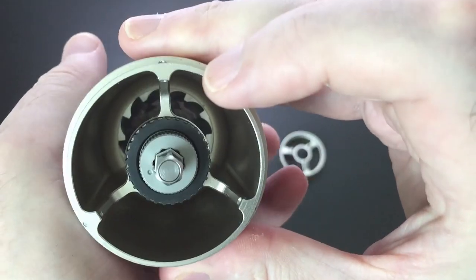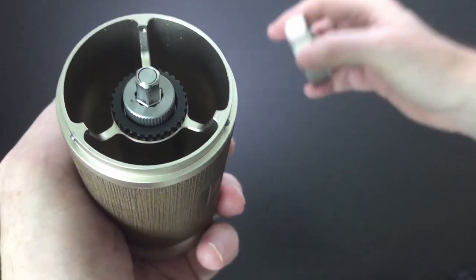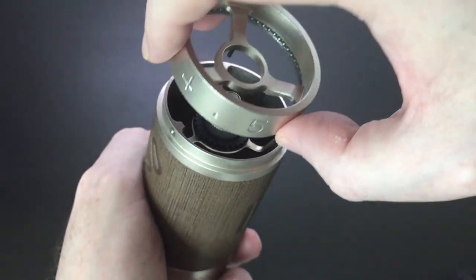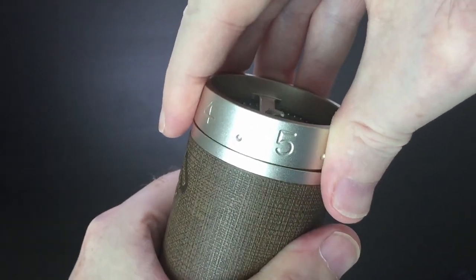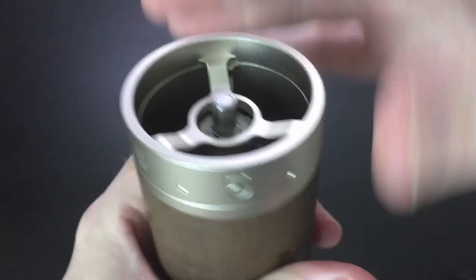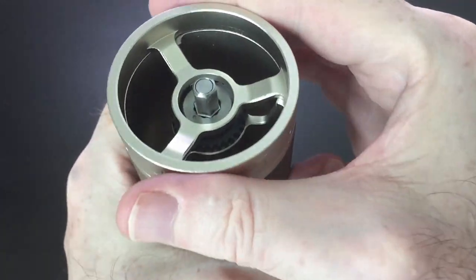Next, put your adjustment dial back on. Doesn't matter where it is, just put it back into place like so. And close your burrs 100%.